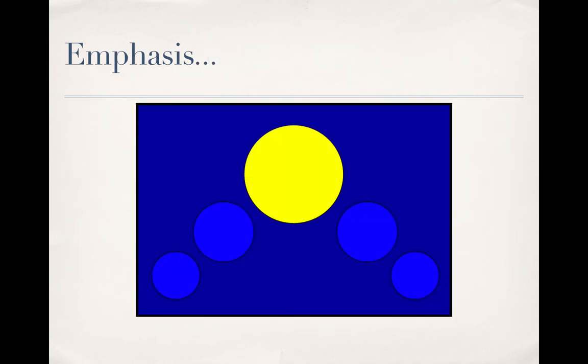In this simple example, I have created a design that forces you to look at the yellow circle. Your brain really doesn't have a lot of choice here as to where to look.